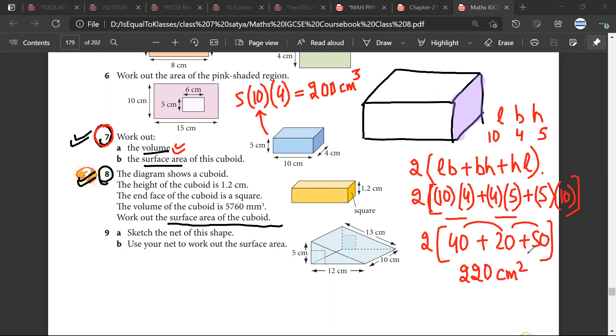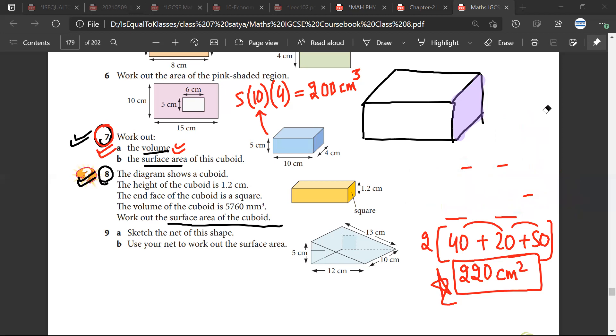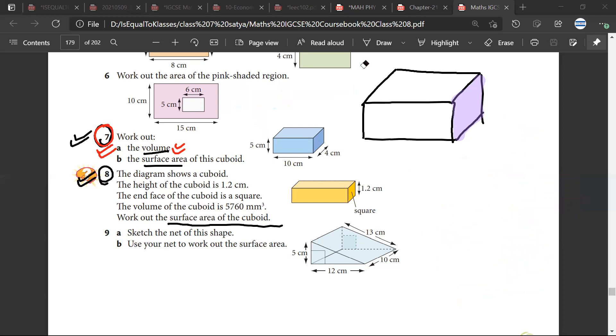220 centimeters square. Sarthak, Satya, is it the answer that you have got? Yes, yes. Okay, so the seventh one is easy because that requires only the formula and you just need to put the values and you will find the answer. For question number eight we need a bit of understanding. Let us try to understand how to do question number eight.